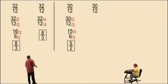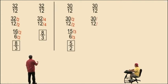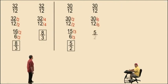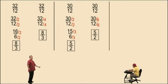Let's move on. With 30 and 12, notice we divided by 2 and then by 3 — that means we could initially divide by 6 and get the answer in one step. 30 divided by 6 is 5, 12 divided by 6 is 2, and there you go.